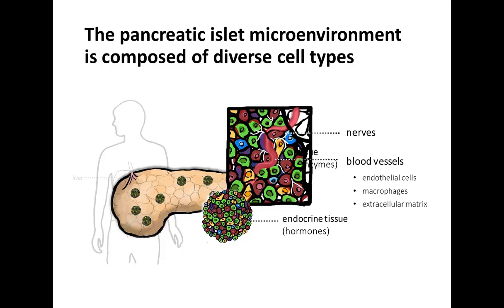Scattered throughout the exocrine tissue are islets of Langerhans — small clusters of endocrine cells that secrete hormones to regulate blood glucose. Islets are composed of alpha, beta, and delta cells. The islet microenvironment also includes other cell types in close contact with endocrine cells, including nerves and blood vessels, which are structurally composed of endothelial cells and also act as a conduit for immune cells such as macrophages to enter the tissue.